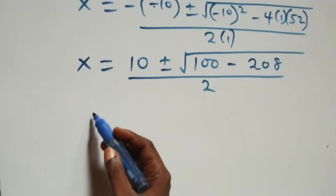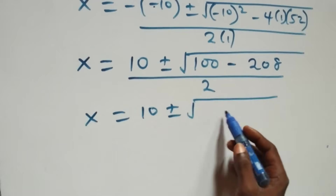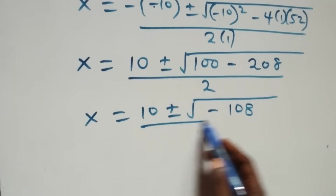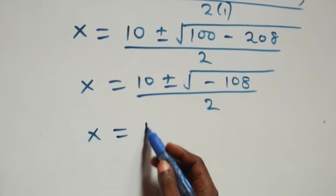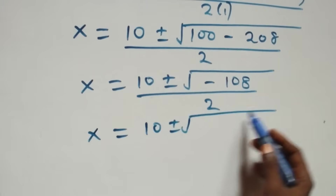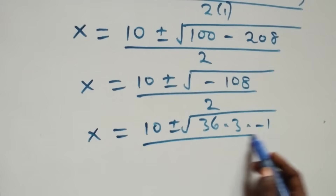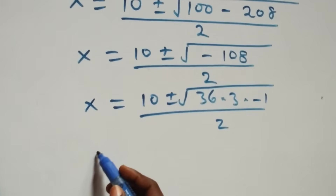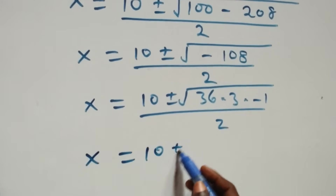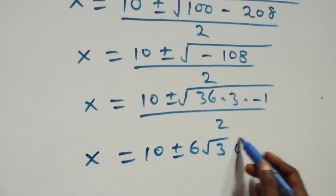This becomes x equals to 10 plus or minus square root of 100 minus 208, which is minus 108, all over 2. This can also be written as x equals to 10 plus or minus square root of 36 times 3 times minus 1, all over 2. Root 36 we can take out as 6, so this becomes x equals to 10 plus or minus 6, times root 3, times root minus 1, which is i, over 2.